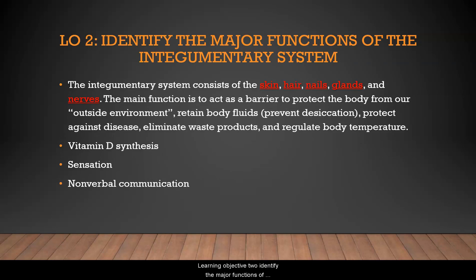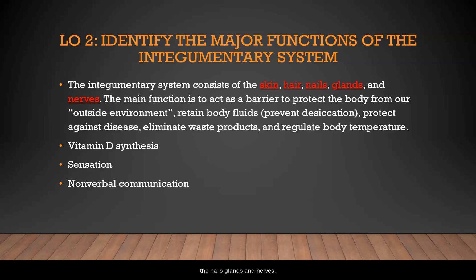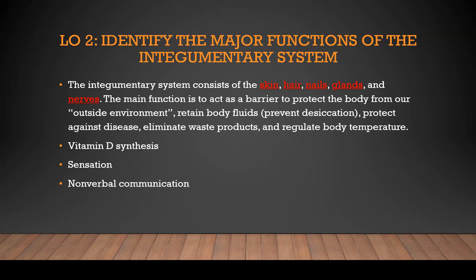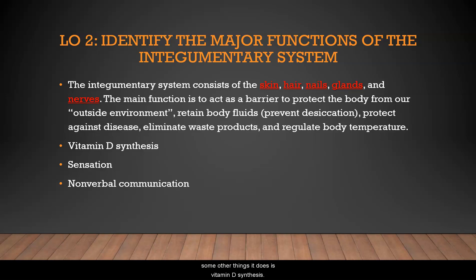Learning Objective 2: identify the major functions of the integumentary system. The integumentary system consists of the skin, hair, nails, glands, and nerves. Its main function is to act as a barrier to protect the body from the outside environment, retain body fluids preventing desiccation, protect against disease, eliminate waste products, and regulate body temperature. Other functions include vitamin D synthesis, sensation, and nonverbal communication.